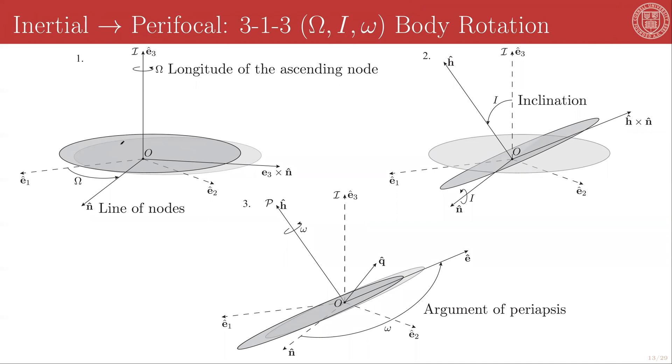So we start with capital Omega, which is the longitude of the ascending node, rotation about our inertial E3 axis. And this E3 axis can be anything. The E1, E2, E3 describe any arbitrary frame. This takes our first unit axis of our initial frame into the N hat direction, which is called the line of nodes.